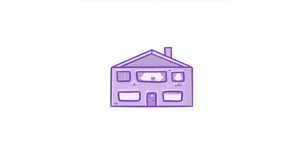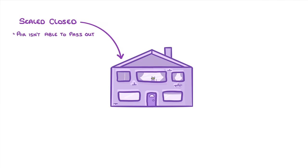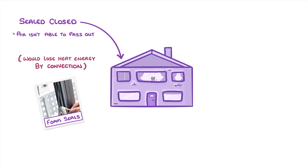First, we want to make sure that our house is sealed closed, to make sure that air isn't able to pass out of our home, because otherwise we would lose heat energy by convection, which is when heat is transferred through liquids and gases. This is why we have foam seals around our doors and windows, and one of the reasons why we draw up curtains at night.